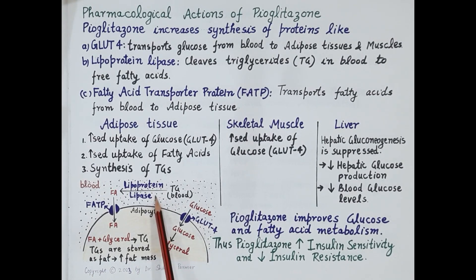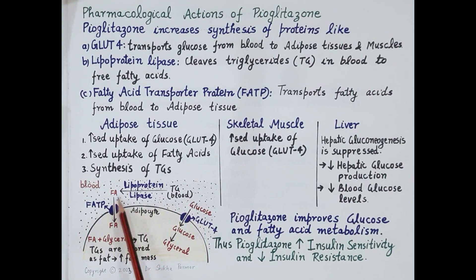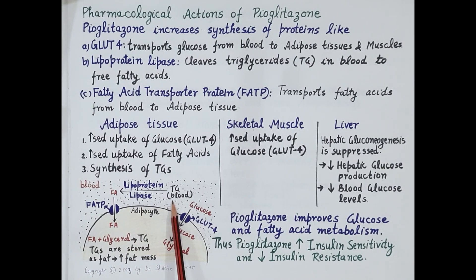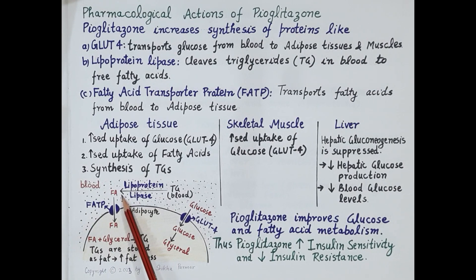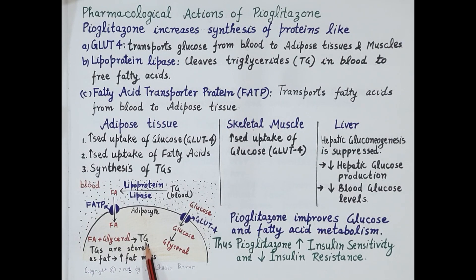Pioglitazone also causes increased synthesis of lipoprotein lipase, an enzyme that cleaves — or breaks — triglycerides in the blood into fatty acids. This increases fatty acid levels in the blood while reducing blood triglycerides. Another protein synthesized due to pioglitazone is FATP (fatty acid transport protein), which transports these fatty acids from the blood into the adipocytes. These fatty acids then combine with glycerol to produce triglycerides, which are stored in the adipose tissue, increasing fat mass and therefore body weight.